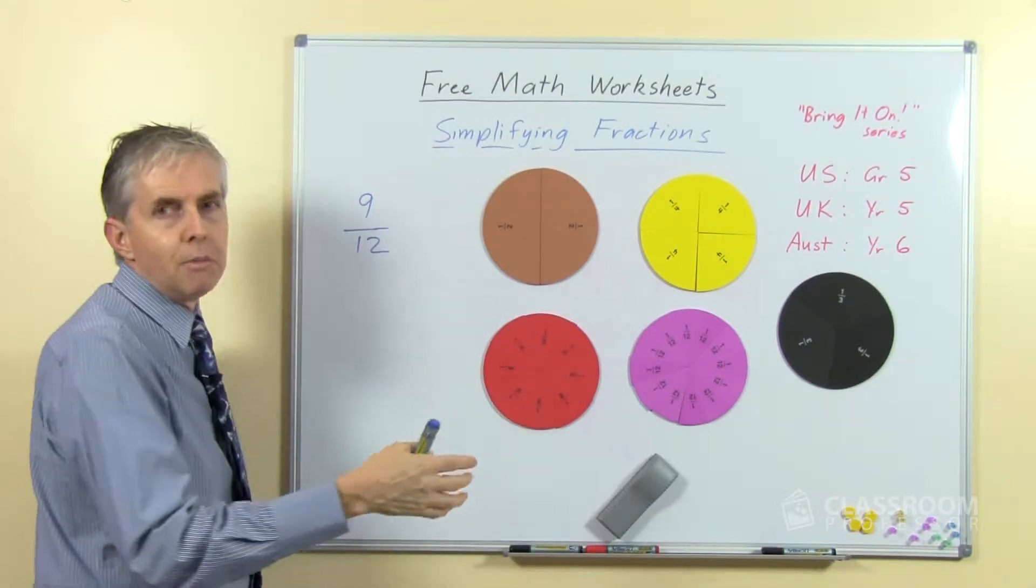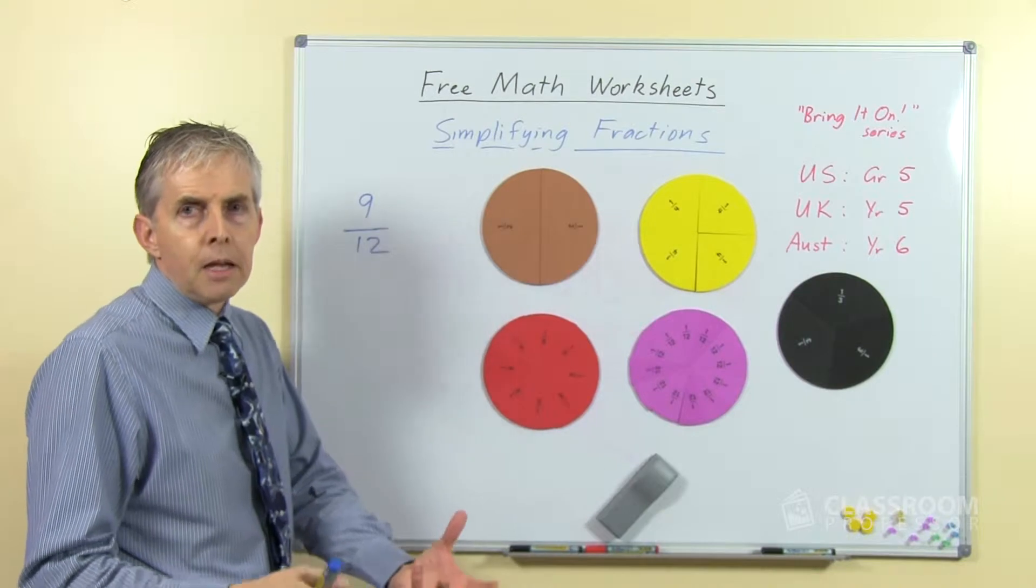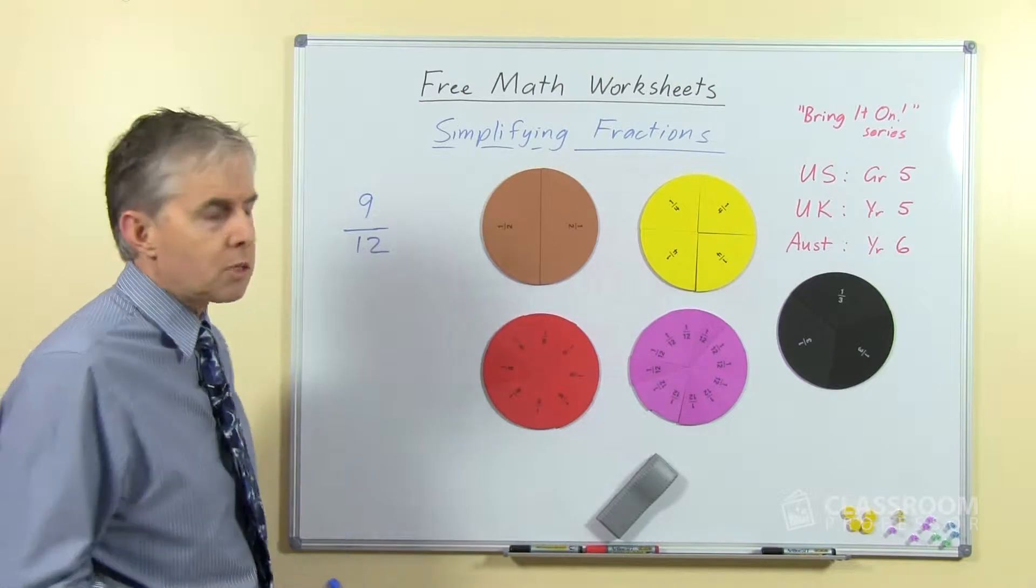So the nine is a counting number, how many twelfths do we have? We have nine-twelfths. And we could count in twelfths, one-twelfth, two-twelfths, three-twelfths, dot-dot-dot, up to nine-twelfths.